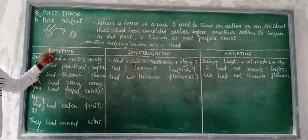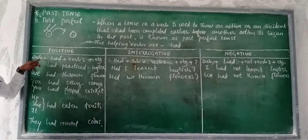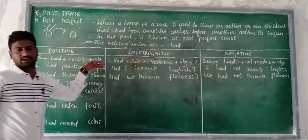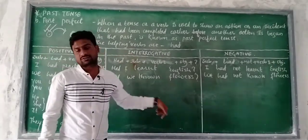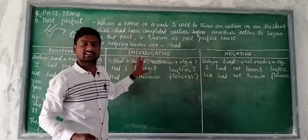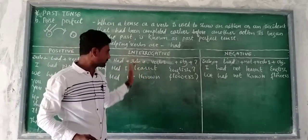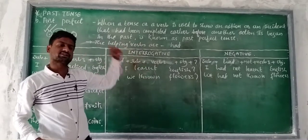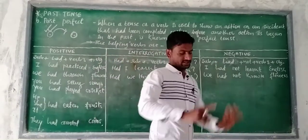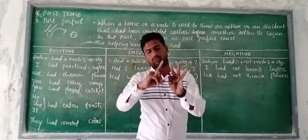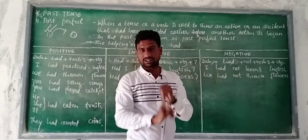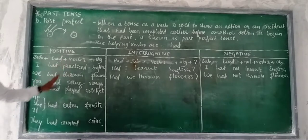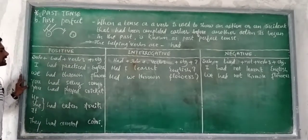For positive: Subject + had + Verb 3 + Object. For interrogative: the helping verb 'had' comes first, then Subject + Verb 3 + Object + question mark. For negative: Subject + had + not + Verb 3 + Object. On the basis of these sentence structures I am going to give you the examples.